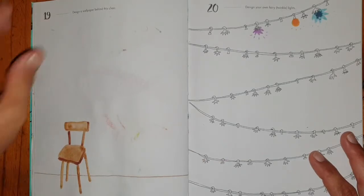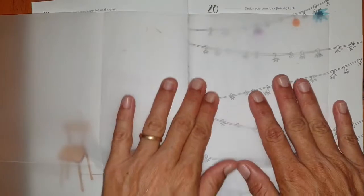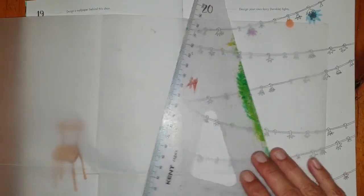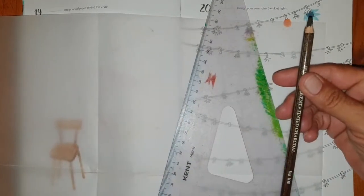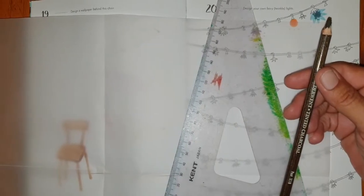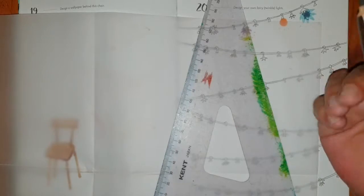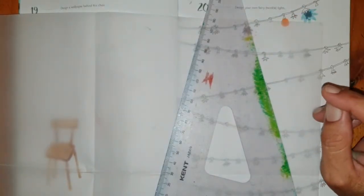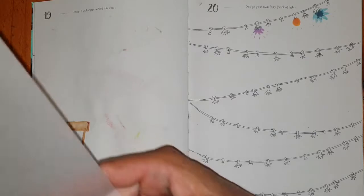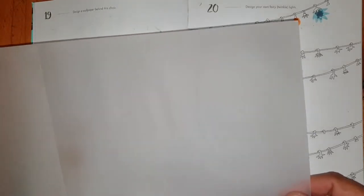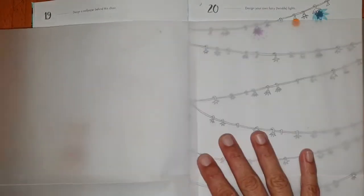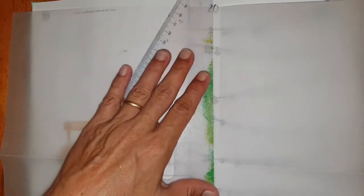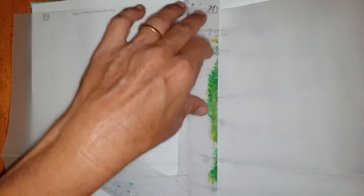What we're going to need is some tracing paper, a set square or ruler or something of the kind, a soft lead pencil or charcoal pencil or something similar that transfers easily when you touch it. We're also going to need our standard watercolor set, which will be just a pan set of watercolors, a small round brush and some water. First thing we're going to do is cut a piece of paper about the same size as our page.